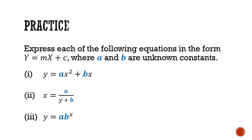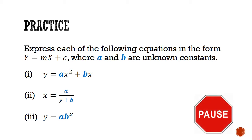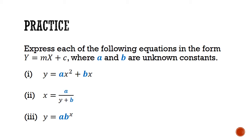Now it's your turn. Express each of the following equations in the form big Y equals m big X plus c, where a and b are unknown constants. Pause the video here and give this question a good try. Note that there are multiple solutions for each part — I'm going to give you two possible answers for each equation.